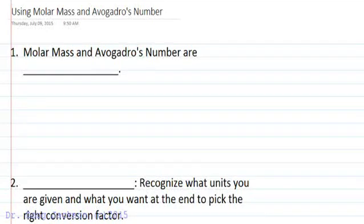So molar mass and Avogadro's number are nothing more than conversion factors. So what we need to do is take one and set it up.